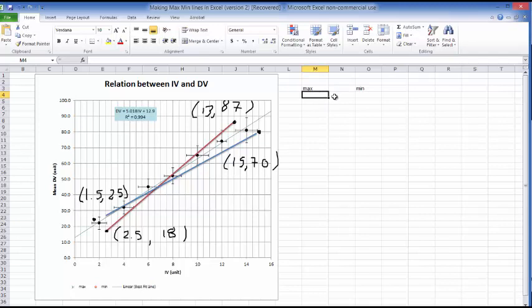And now I'm going to type those numbers in here. So my two maximum points, I'll write the x and y values right here. So it'll be 2.5, 18 in that first row, followed by 13 and 87.